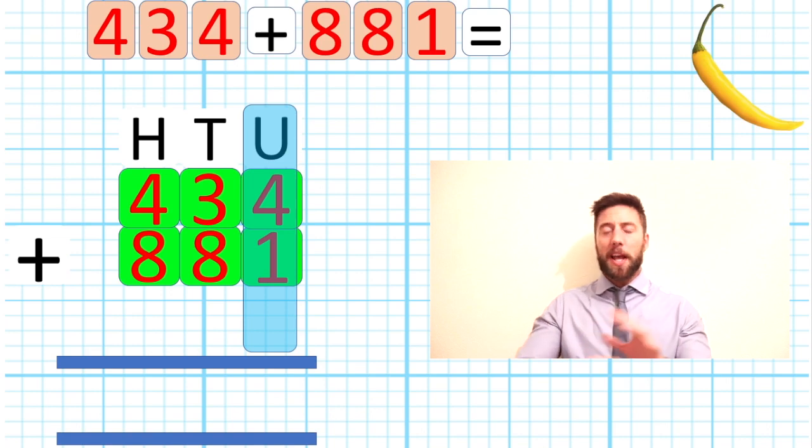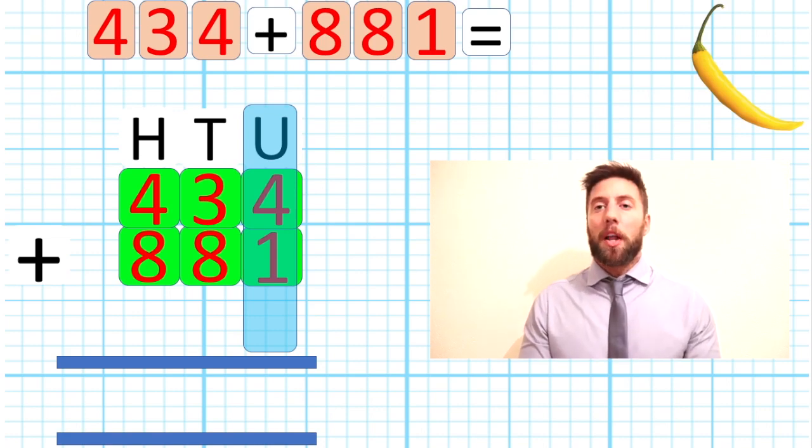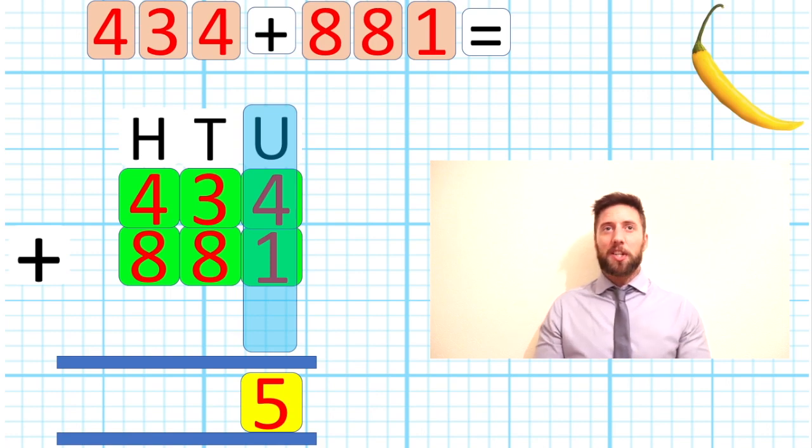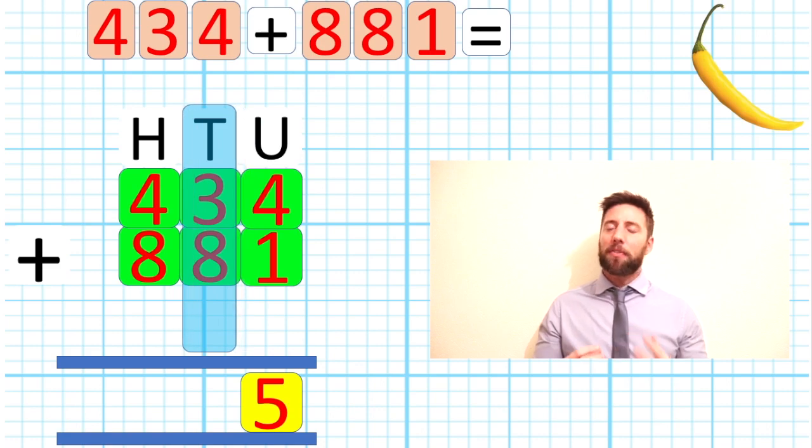Where do we start? We know now we start in our units column. We always start in our smallest value whenever we're doing any form of column work - addition, subtraction, multiplication, anything like that. We always start with our smallest value. So here we go: adding 4 to 1 equals 5. Nothing difficult there, same as stage one.